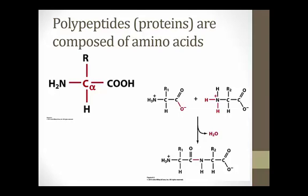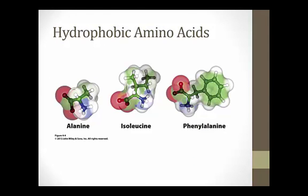Although all amino acids have the same basic structure, the distinguishing R group gives each amino acid different physical and chemical properties. Of the 20 common amino acids seen in nature, we can categorize each into one of three basic categories. The first is hydrophobic amino acids — amino acids containing a variety of shapes and sizes in their R groups that are all nonpolar in nature. Some are very bulky, such as the phenyl R group of phenylalanine, and some are more compact, such as the methyl R group of alanine.